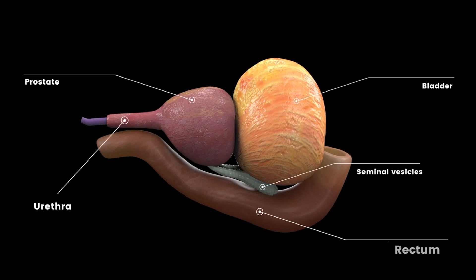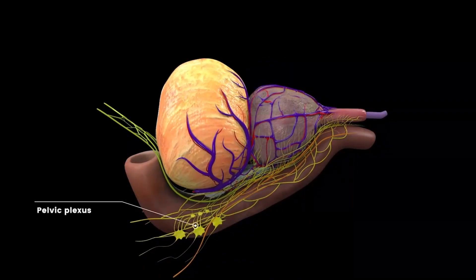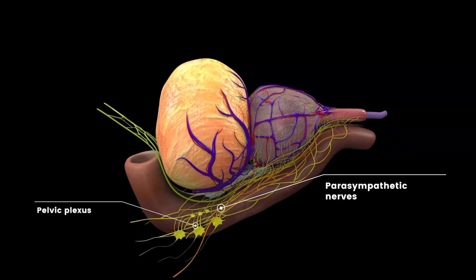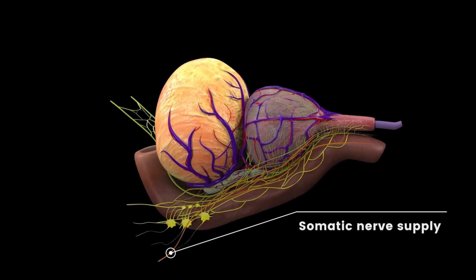The anterior branches of S2 to S4 form the pelvic nerve and contribute as a parasympathetic branch to the pelvic plexus. The somatic supply originates from the sacral roots of the spinal cord as the pudendal nerve. It passes along the pelvic splanchnic nerve with the pelvic plexus.